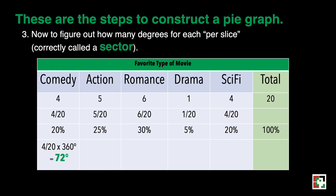For action: 5 over 20 times 360 gives 90 degrees, or 25% of 360 degrees equals 90 degrees. For romance: 6 over 20 times 360 degrees equals 108 degrees, or simply 30% of 360 degrees equals 108 degrees.